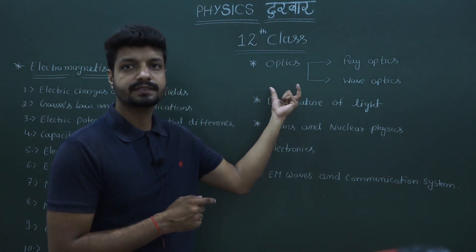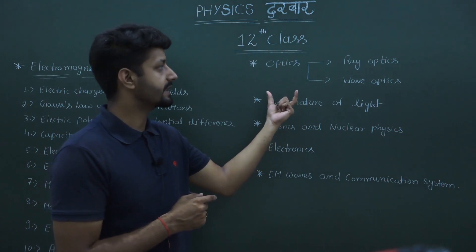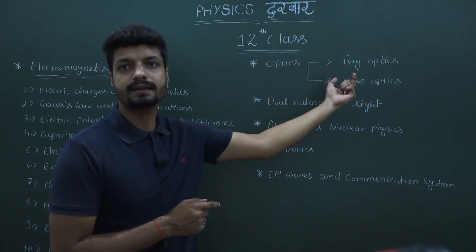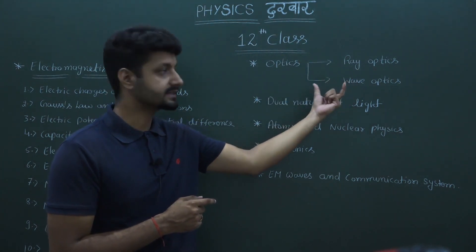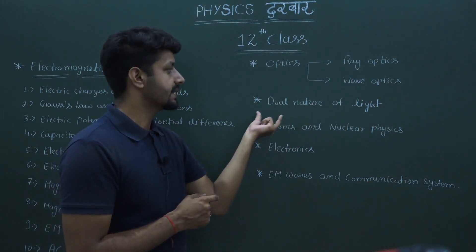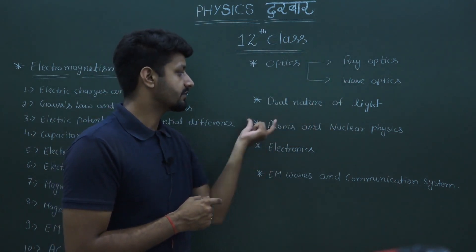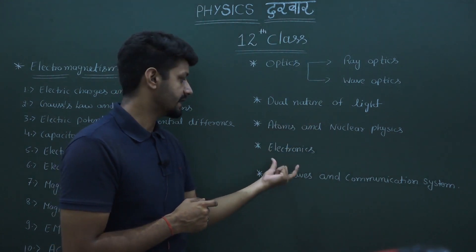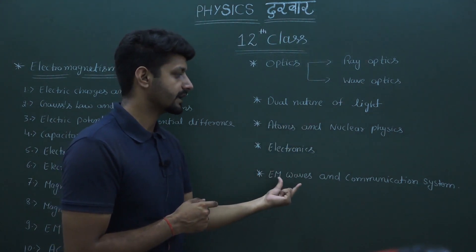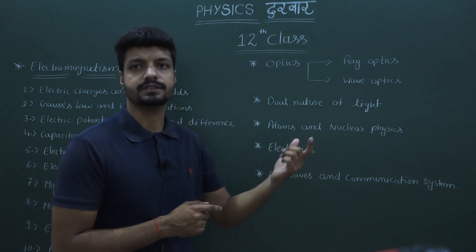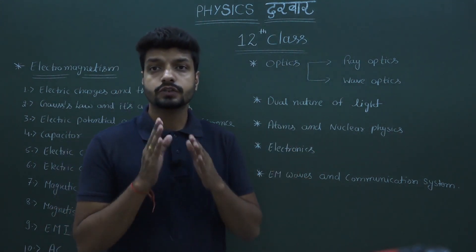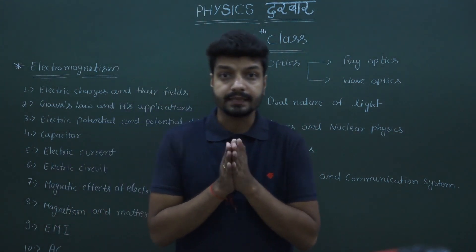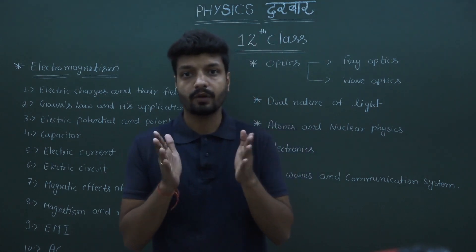There is also electromagnetic waves, which is in the last chapter of our second part. In the second part of physics, we first talk about optics. Optics is divided into two parts: ray optics and wave optics. Then dual nature of light, then atoms and nuclear physics, electronics, electromagnetic waves, and communication system.